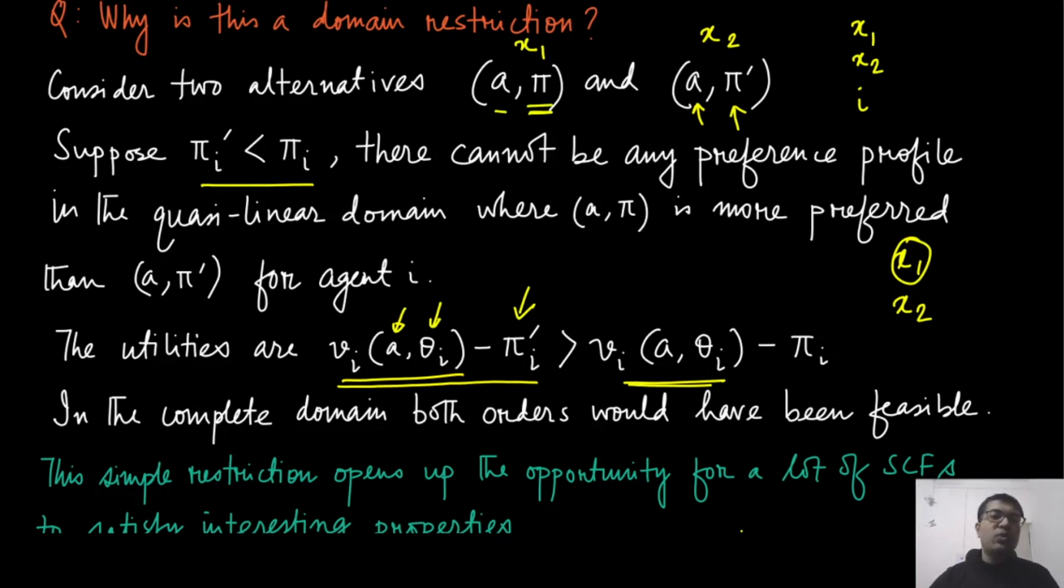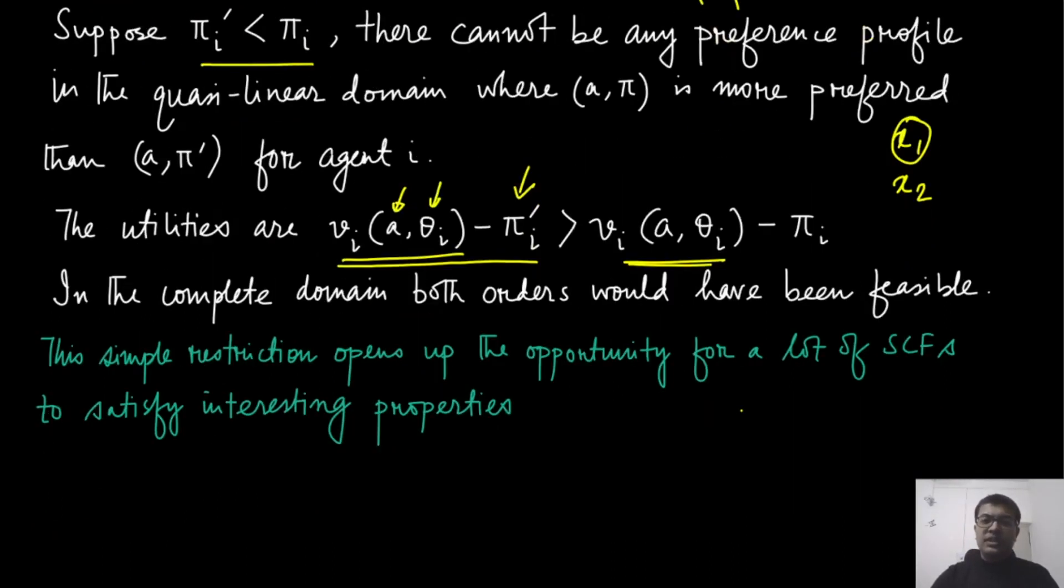So player i will always like to have a lower payment than a higher payment. And that brings a kind of domain restriction in this context of mechanism design with transfers. And we will see that this simple restriction will open up a lot of opportunity for certain social choice functions that satisfy some interesting properties, including truthfulness.